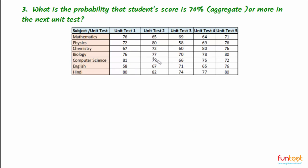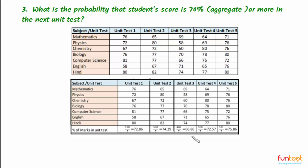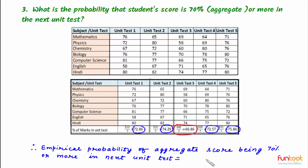The third part of the question asks: what is the probability that the student's score is 70% or more in the next unit test, considering the aggregate score of all 7 subjects? In this table we have calculated the aggregate for all 7 subjects in the 5 unit tests, and we can see that in 4 out of 5 tests the aggregate scores are greater than 70%, and only in one case the score is less than 70%. Therefore, the empirical probability of the aggregate score being 70% or more in the next unit test is 4/5, or 0.8.